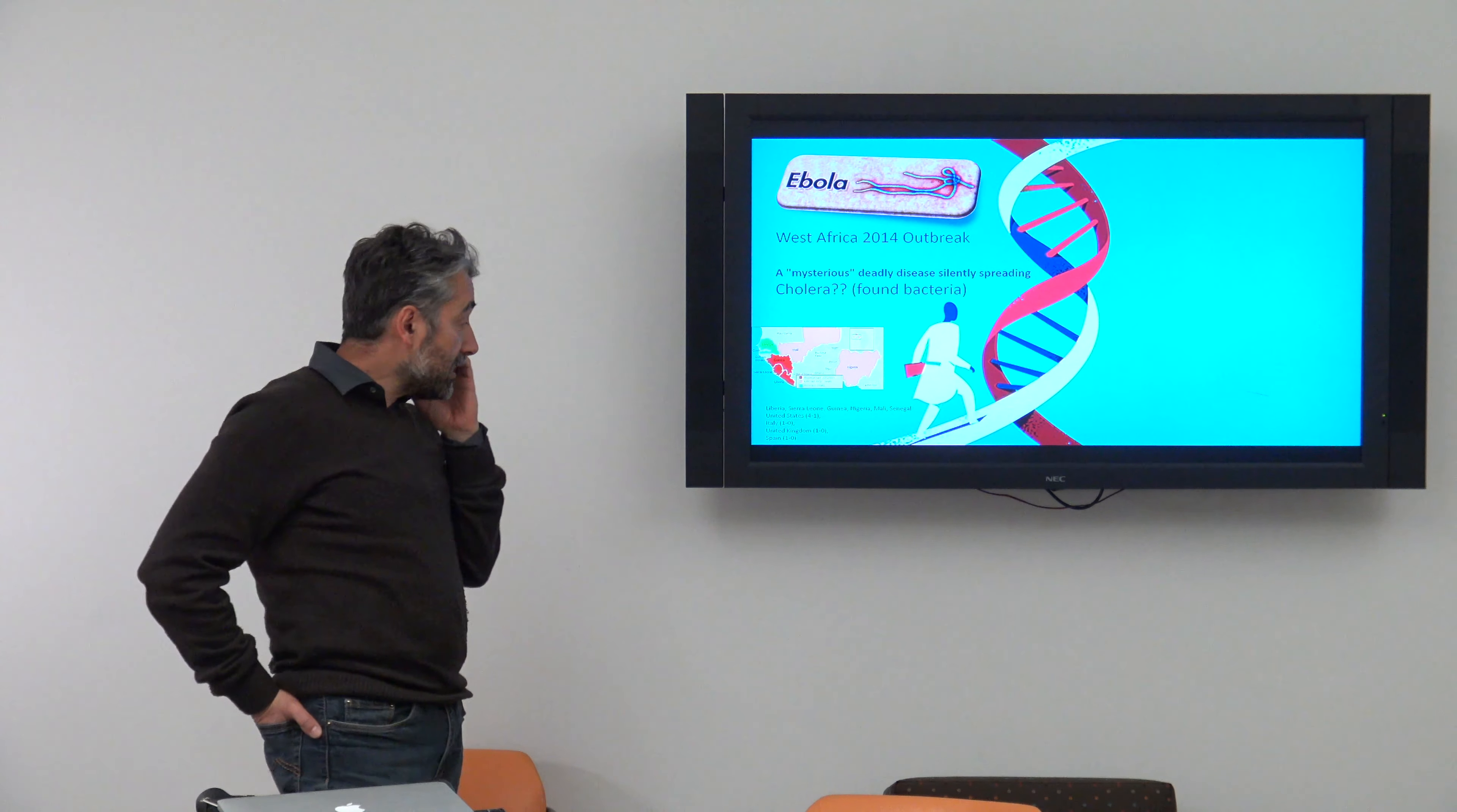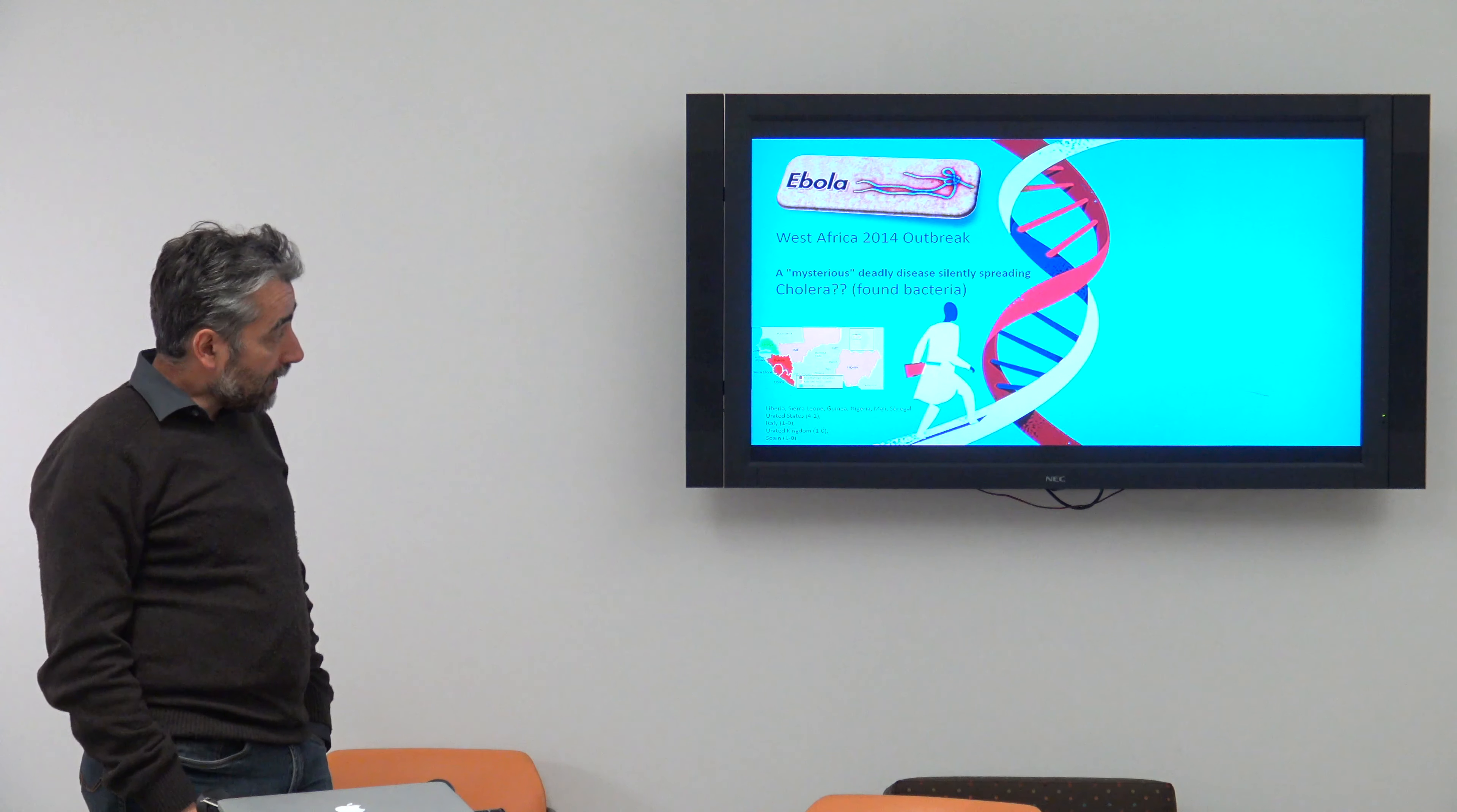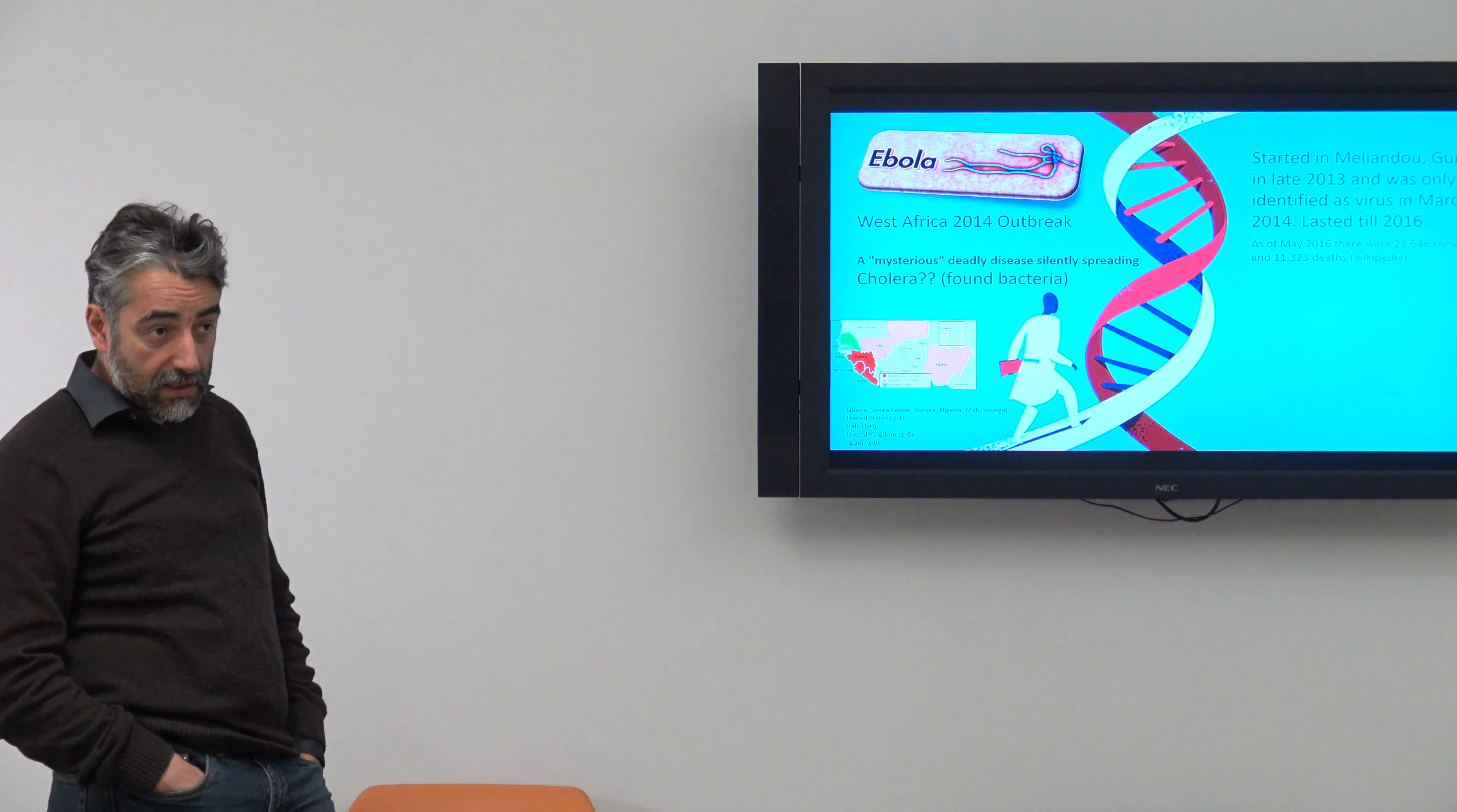I'll start with the Ebola virus. So you know about the Ebola virus. It's a virus, a terrible virus. This disease is actually not curable and it can kill. It's very fast, it spreads very fast. So in 2014 there was an outbreak, a very serious outbreak in the west of Africa. And for a long time they had no idea it was the Ebola virus. They thought it was cholera because actually where people were sick they found bacteria. So they didn't even think about the virus.